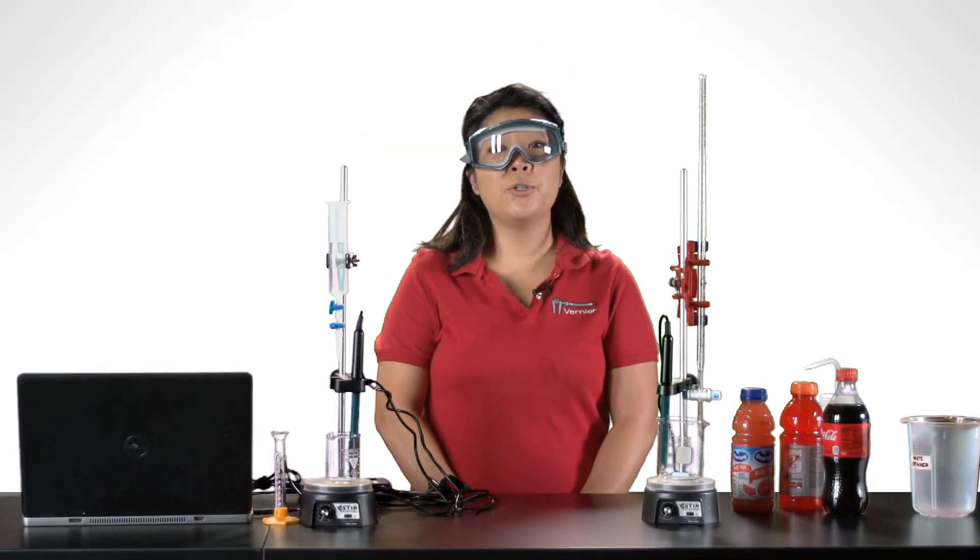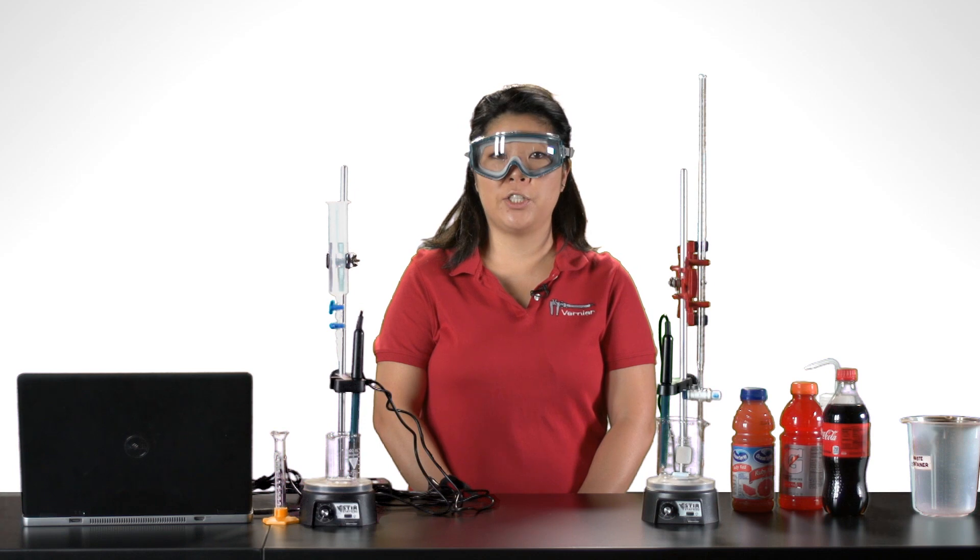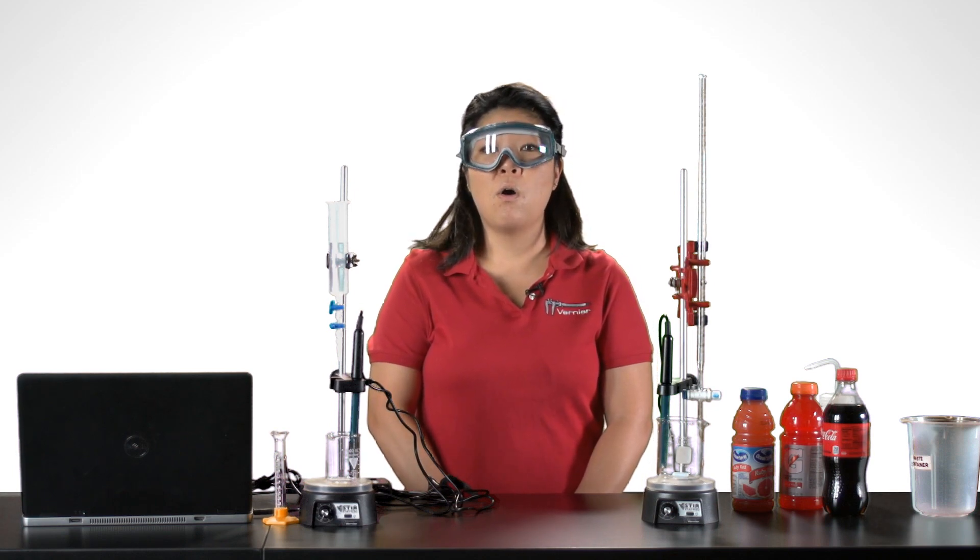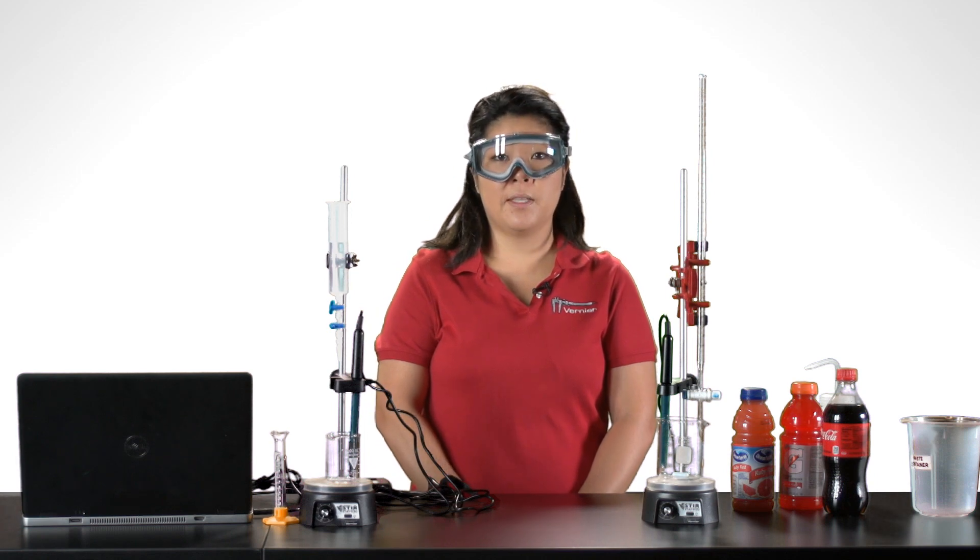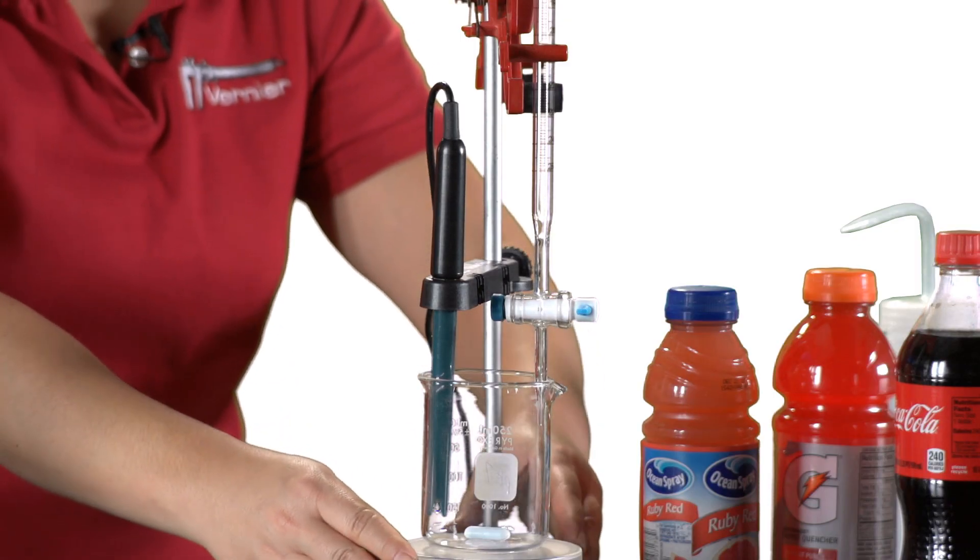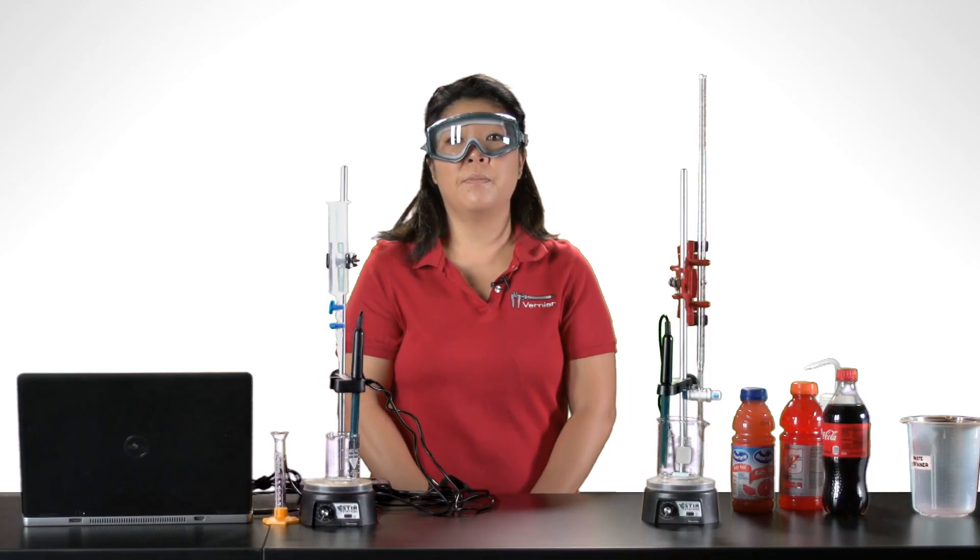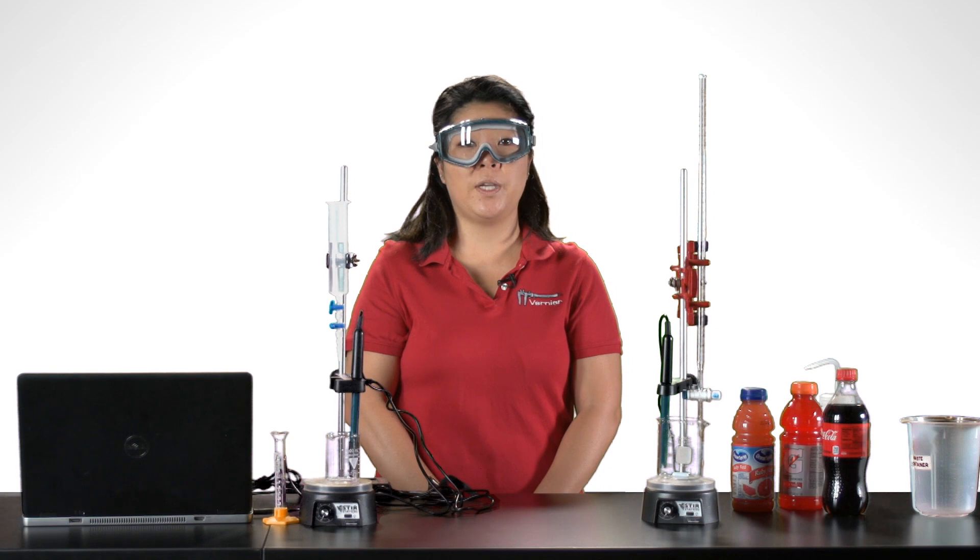For the equipment, here are two options for setting up the titration. Either option can be used with the computer running Logger Pro software or with LabQuest. This setup here uses a burette and a pH sensor. The volume will be manually entered for each pH reading.